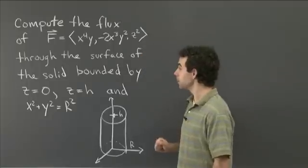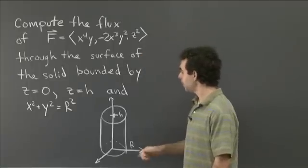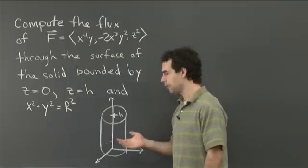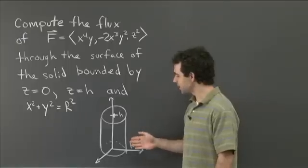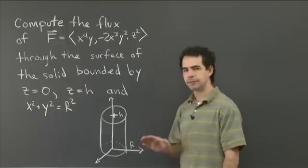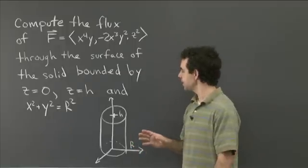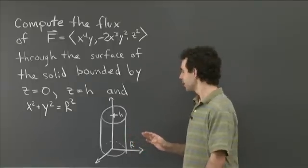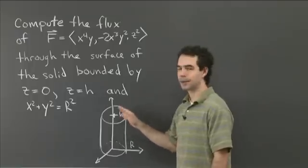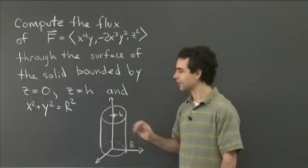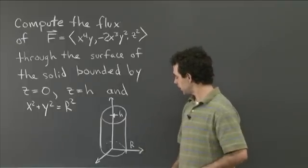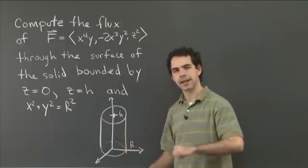So what I'd like you to do is compute the flux of this field F through this cylinder. To compute this as a surface integral, you could do it — if you really want an exercise in nasty arithmetic, I invite you to do it. But you might be able to think of a way that requires less effort than parametrizing the three surfaces and integrating. So pause the video, work this one out, come back, and we can work on it together.